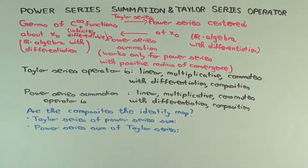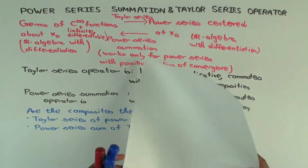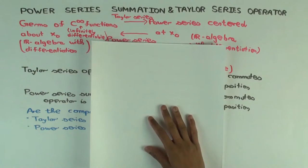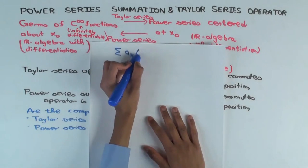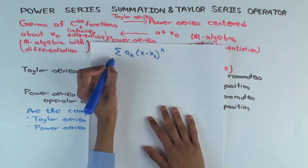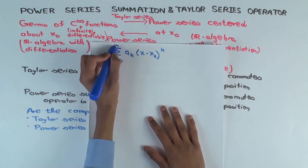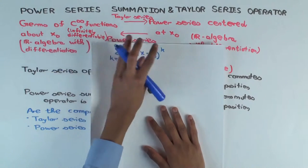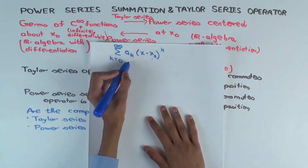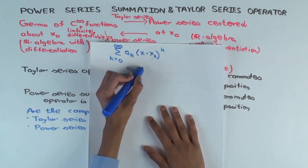On the other side, you have power series centered at x₀. A power series centered at x₀ is of the form: summation of aₖ times (x minus x₀) to the k, where aₖ are the coefficients — all real numbers — and x₀ is a known number, the center about which you are doing everything.